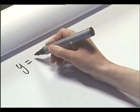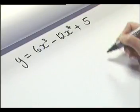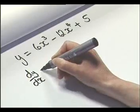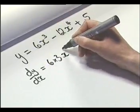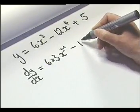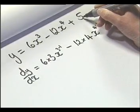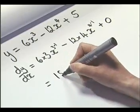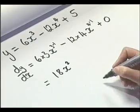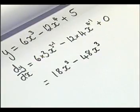Let's have a look at some more complicated examples. Let's try y equals 6x cubed minus 12x to the power of 4 plus 5. So dy by dx equals: we have our 6 multiplied by 3 as we bring the power down, x to the power of 3 take away 1, minus 12 times — bring the power down — 4, x to the power of 4 take away 1. And our derivative of 5 is 0. So 3 times 6 is 18, x to the power of 2, minus 4 times 12 is 48, x to the power of 3. So there's our derivative.